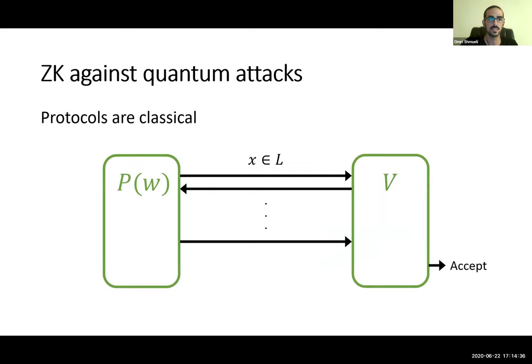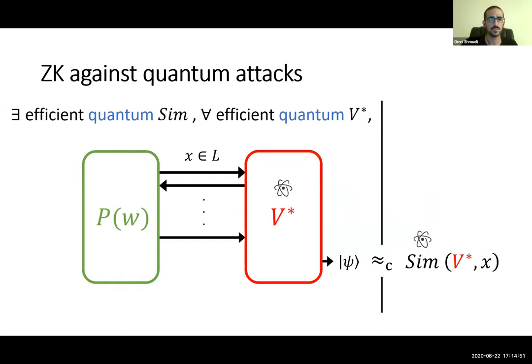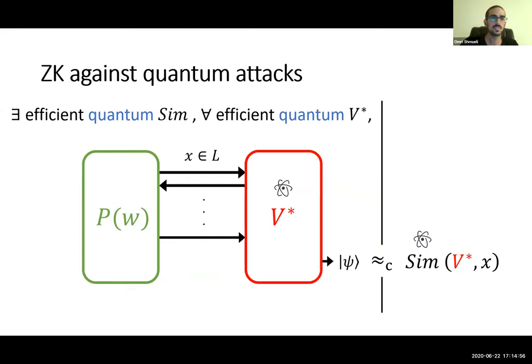We focus on zero knowledge against quantum attacks, which means the honest parties' protocols are still classical, but security is against quantum computers: soundness holds against polynomial-time quantum provers, and zero knowledge holds against polynomial-time quantum verifiers. There is an efficient quantum simulator such that for every efficient quantum verifier, the quantum output of the verifier at the end of the interaction is efficiently simulated by the simulator.